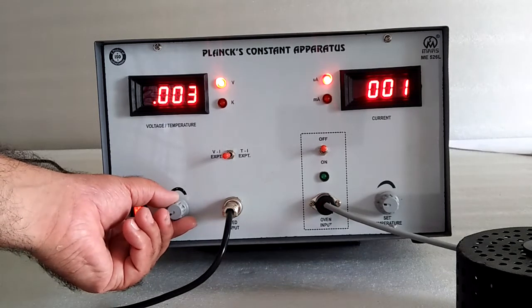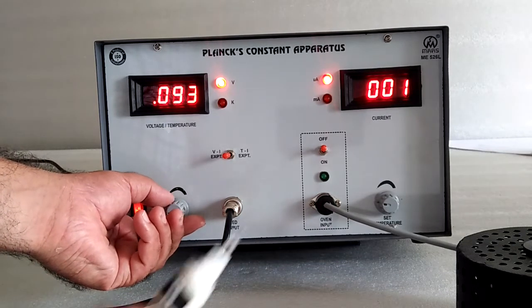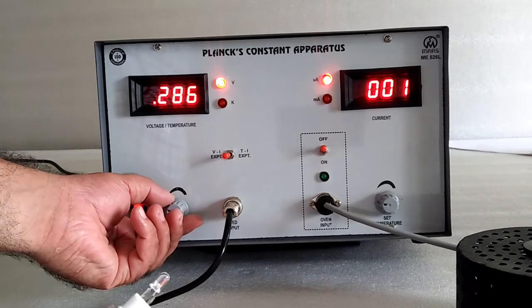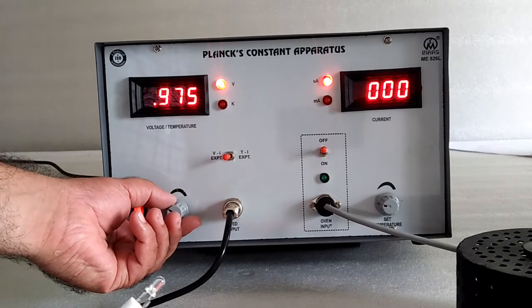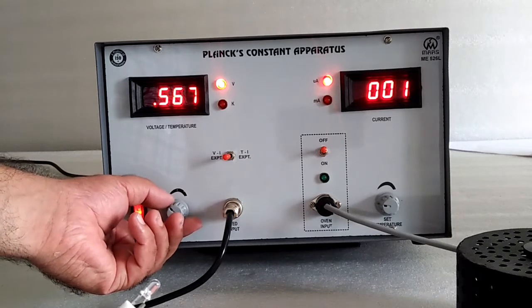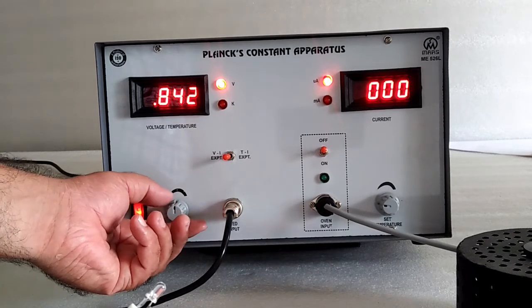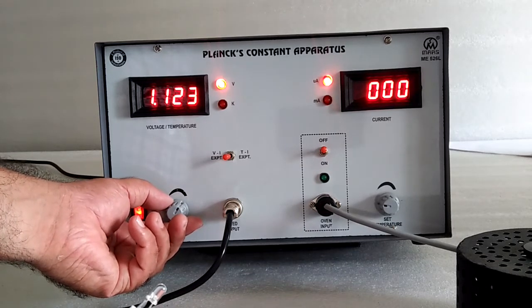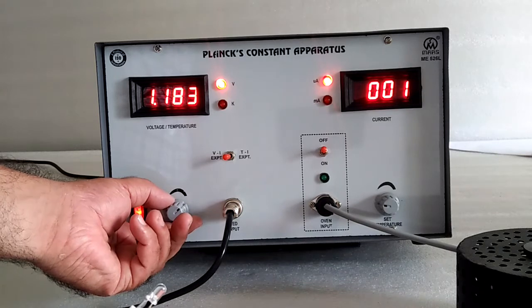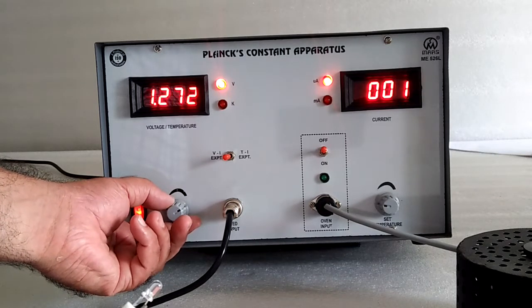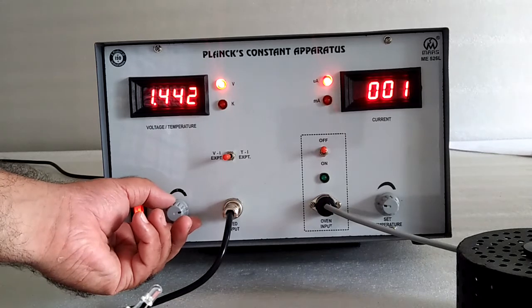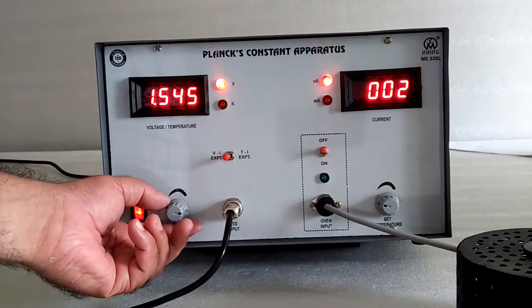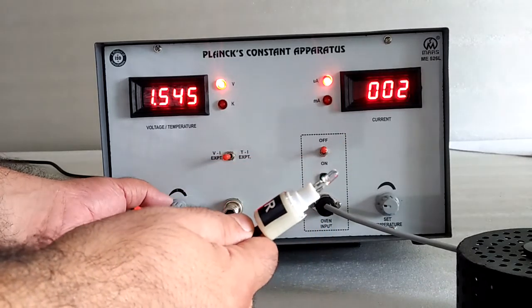Increase the voltage. Increase the voltage in small steps and note down the current for the different values of the voltages. Now, you can see the current is coming.